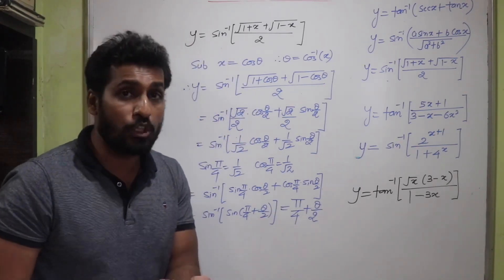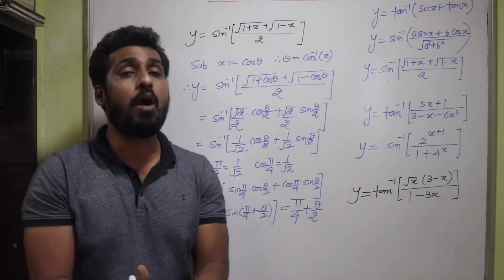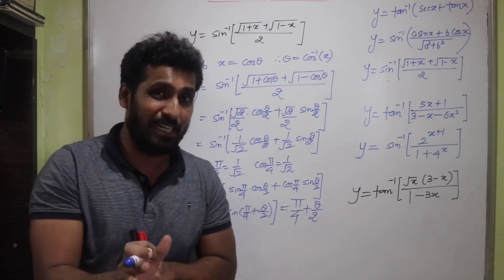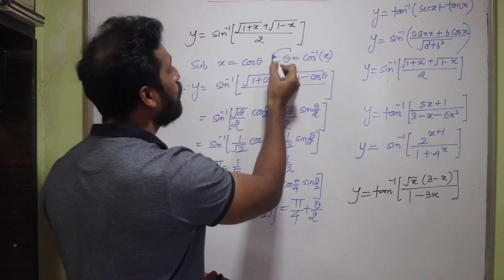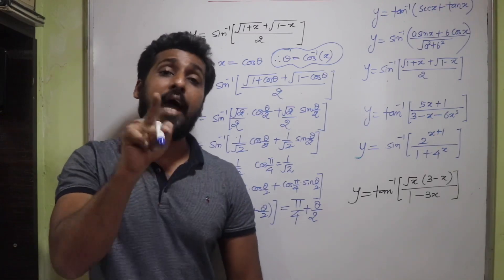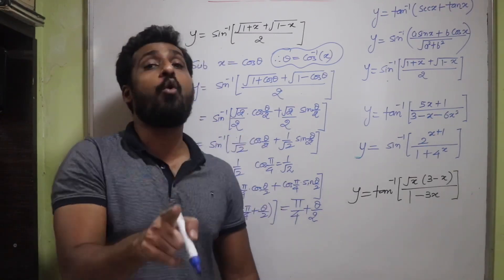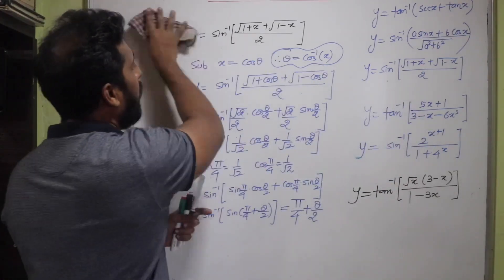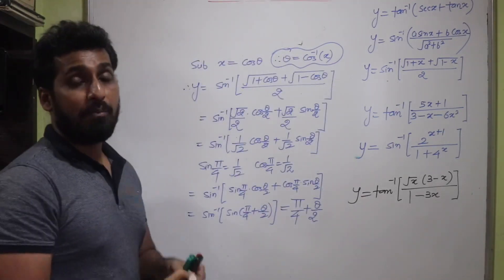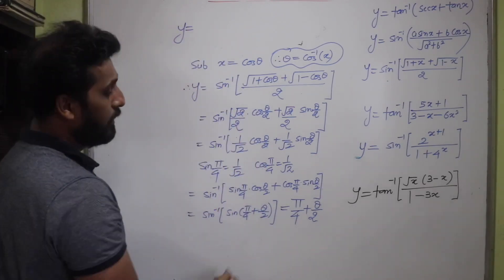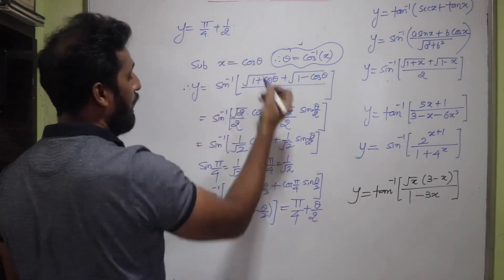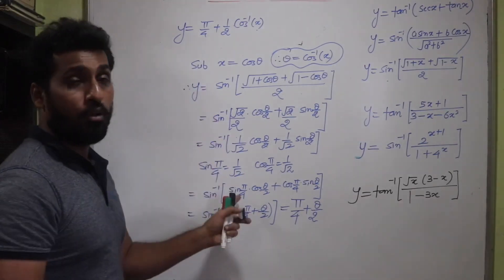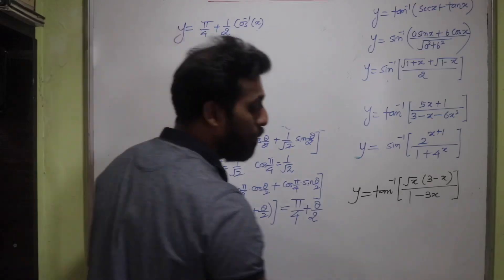Now θ is not a constant — it was our substitution. Since θ = cos⁻¹(x), we replace: y = π/4 + (1/2)·cos⁻¹(x). Differentiating: dy/dx = 0 + (1/2)·(−1/√(1−x²)) = −1/(2√(1−x²)).